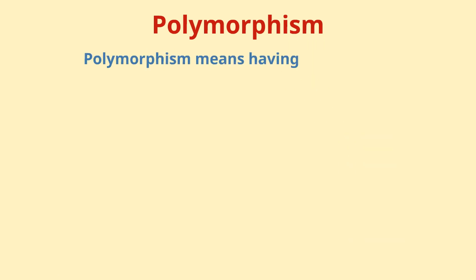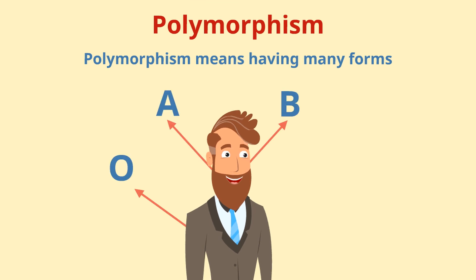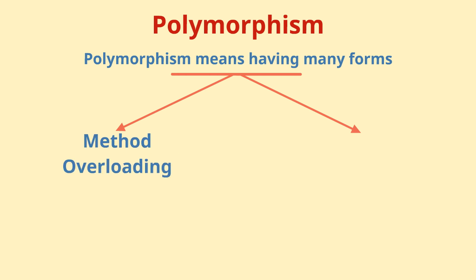Now, we have come to the next OOP concept, which is polymorphism. Polymorphism means having many forms. In the real world, humans have different blood groups like O, A, B, AB. Similarly, in Java, we use method overloading and overriding to achieve polymorphisms.